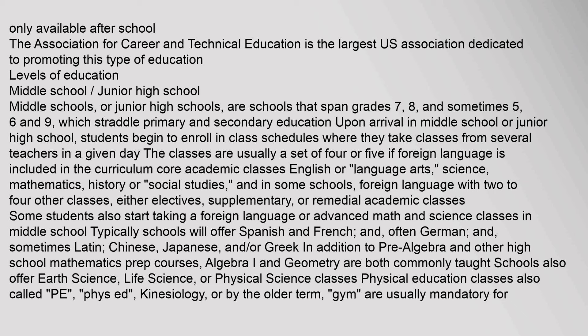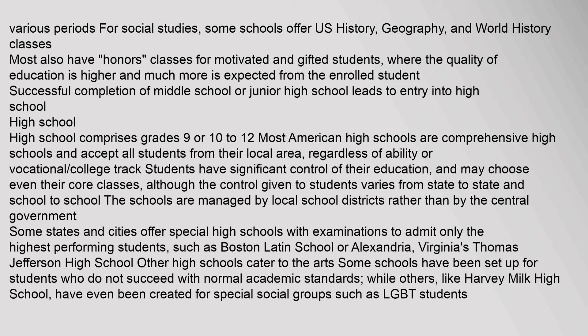Some students also start taking a foreign language or advanced math and science classes in middle school. Typically schools offer Spanish and French, and often German, and sometimes Latin, Chinese, Japanese, and Greek. In addition to pre-algebra and other high school mathematics prep courses, Algebra I and Geometry are commonly taught. Schools also offer earth science, life science, or physical science classes. Physical education classes are usually mandatory. Some schools offer U.S. history, geography, and world history. Most also have honors classes for motivated and gifted students, where the quality of education is higher and much more is expected from the enrolled student.